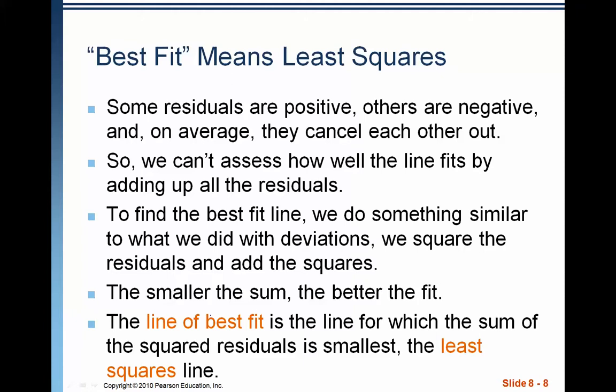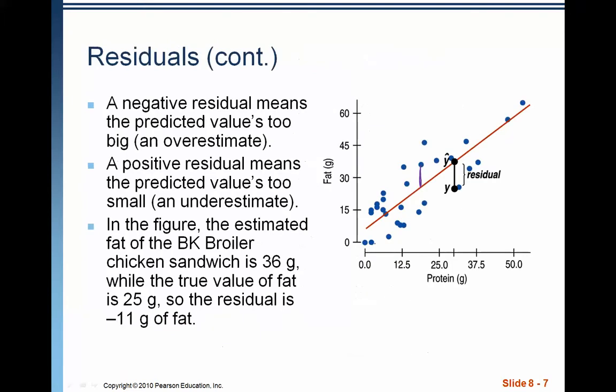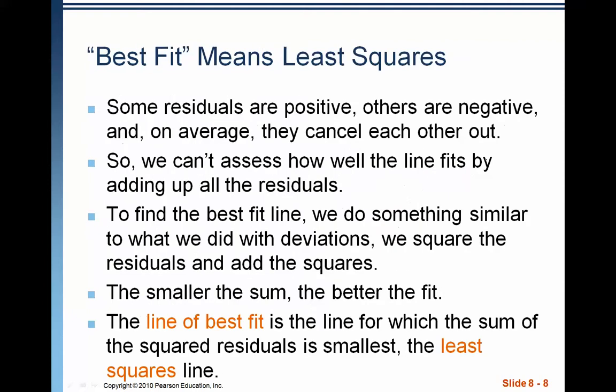Now, what the line of best fit means is that we're trying to reduce the residuals as much as possible. However, since some residuals are positive and others are negative, on average they end up canceling each other out. If you were to take all of these residuals and take the sum of the positive ones and the sum of the negative ones, they're going to be pretty close to zero. And that's the point of the line of best fit.